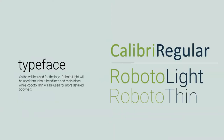For our typeface, we use Calibre Regular, which will be used for the logo. Roboto Lite will be used for any headlines to capture any important ideas or information. While Roboto Thin will be used for more of the wordy information and for any details needed to further expand on the headline.